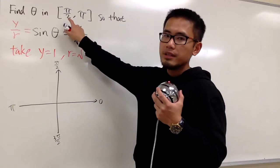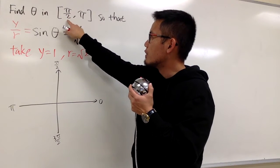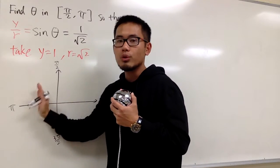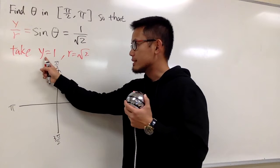Because the question indicates that we want the angle to be between pi over 2 to pi, we want this portion only. Quadrant 2 only. Anyways, now let's see.